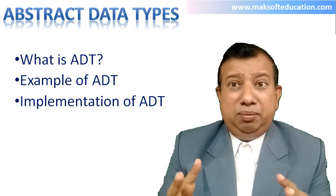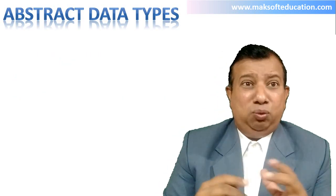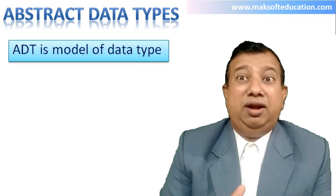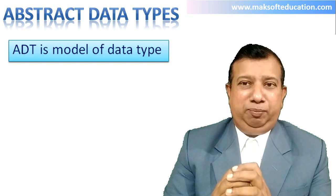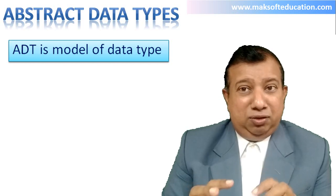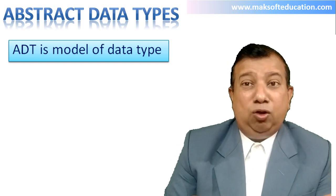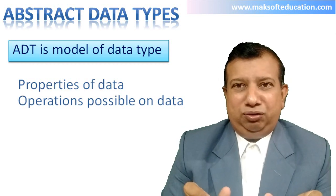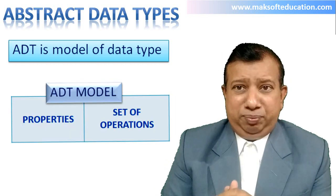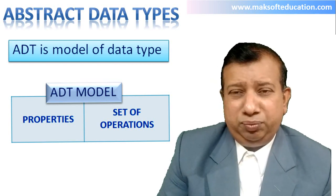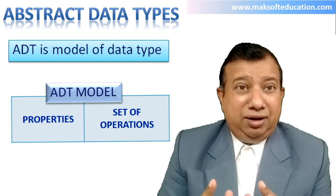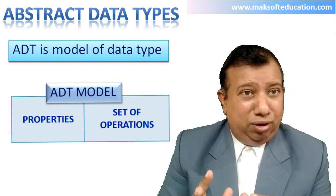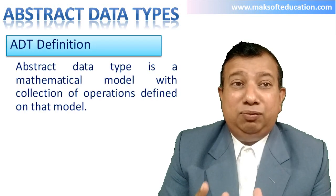Let us begin with understanding what is ADT. Abstract data type is a model that describes two things: one is the properties of data — it explains the nature of data that it stores — and second, it explains the possible operations on that data. So abstract data type is a mathematical model with a collection of operations defined on that model.